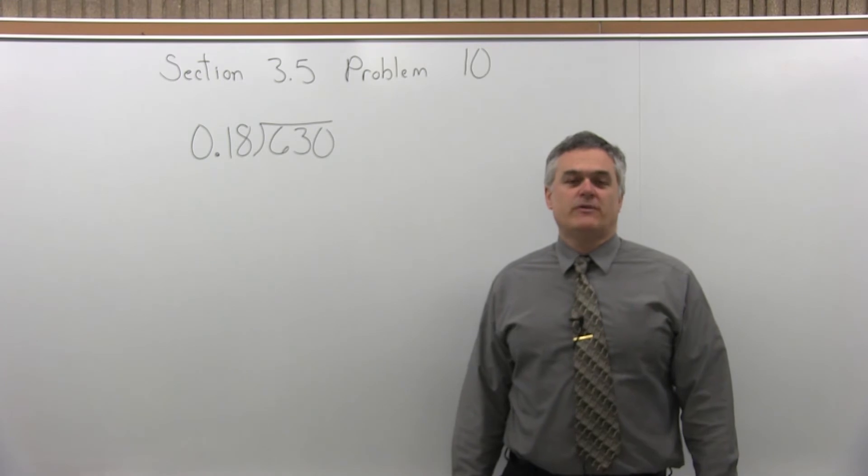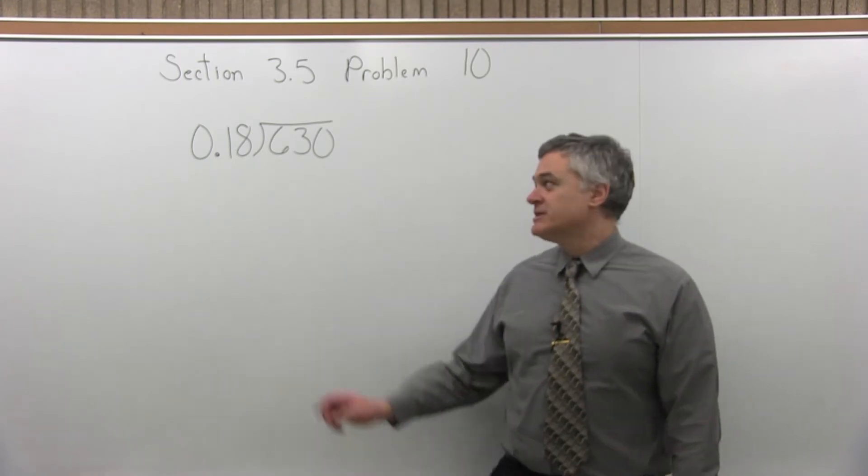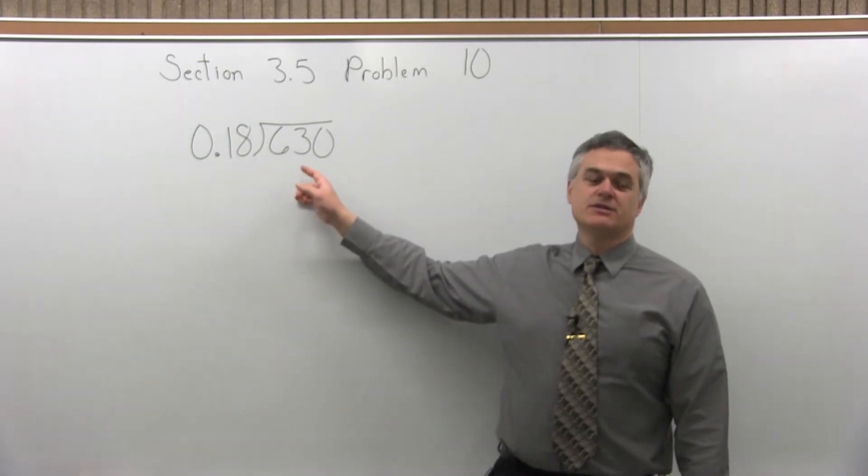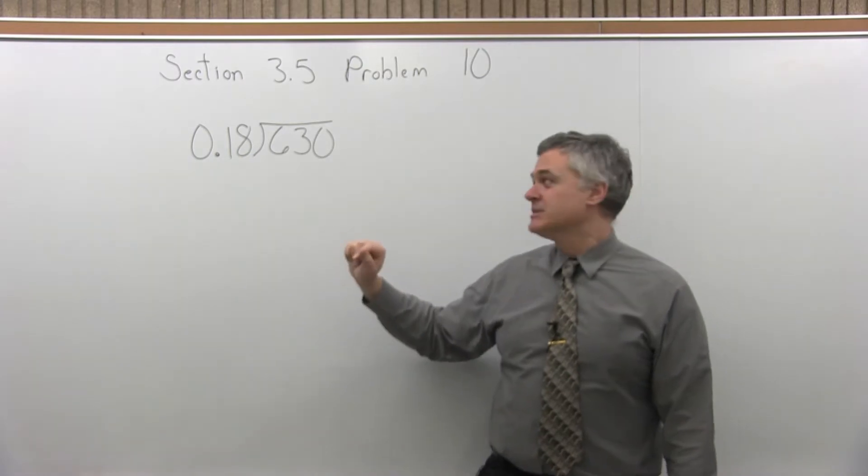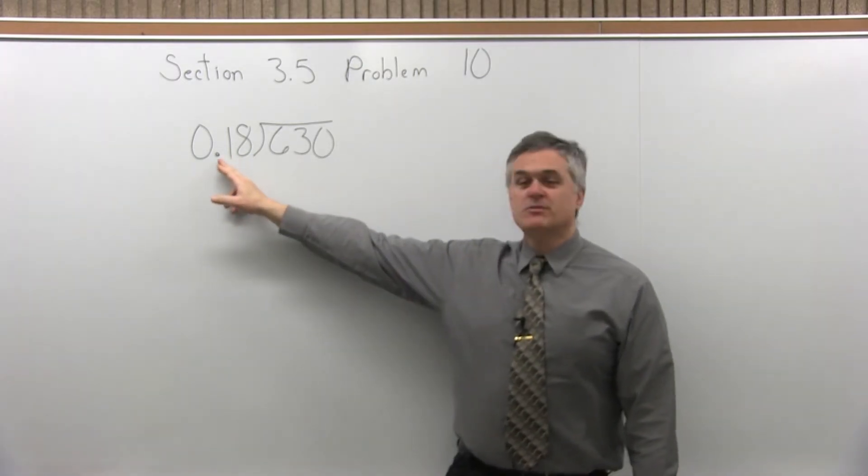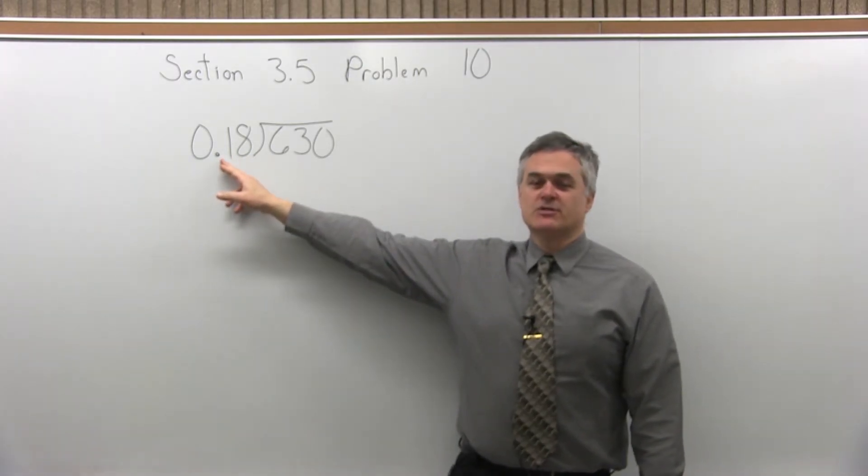This is Section 3.5, Problem 10. What we have is 0.18 divides into 630. How many times? The decimal for the number in front, or divisor, is the problem.